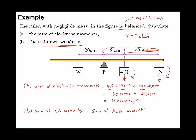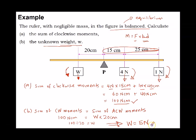The sum of clockwise moments is 100 newton-centimetres. The anti-clockwise moment is due to weight W, which equals W multiplied by 20 cm. Since moment equals force times perpendicular distance to the pivot, we solve: 100 ÷ 20 = W, giving W = 5 newton.